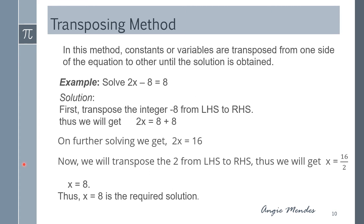Now let us look at the transposing method. In this method, constants or variables are transposed from one side of the equation to another until the solution is obtained. For the equation 2x minus 8 equal to 8, we transpose minus 8 from the left hand side to the right hand side, giving 2x equal to 8 plus 8, which is 16. Then we take 2 to the right hand side to get x equal to 16 divided by 2, so x is equal to 8.